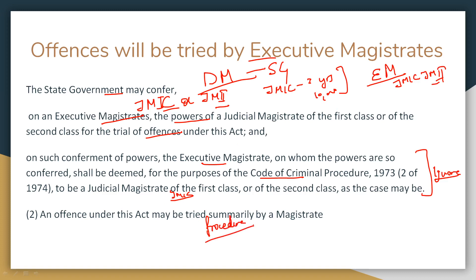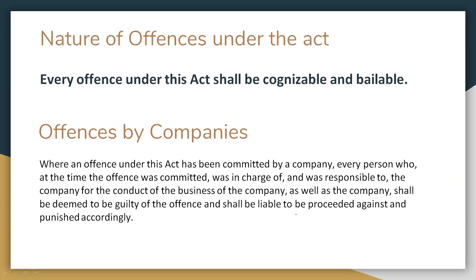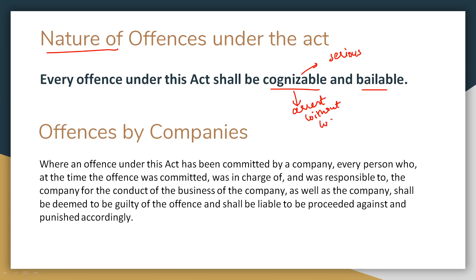Regarding the nature of offenses: they are cognizable and bailable. Being cognizable means the police can arrest without a warrant. Being bailable means the accused can get bail. If a company commits an offense under this Act — for instance, if a company forces employees into bonded labor — the company cannot be jailed since it is an artificial person. Instead, all persons who were in charge of and responsible for the conduct of the business of the company at the time the offense was committed shall be held guilty and punished accordingly.